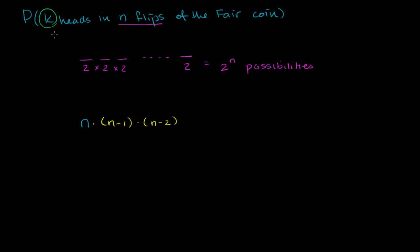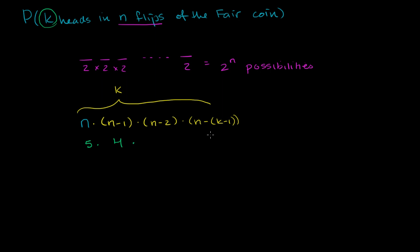We do this until we've accounted for all k heads, multiplying k terms total. So you have n spots for the first head, n minus 1 for the second, all the way down to n minus k minus 1 for the last. We can verify this with n equals 5 and k equals 3: that gives 5 times 4 times 3, which is exactly what we had in the previous example.